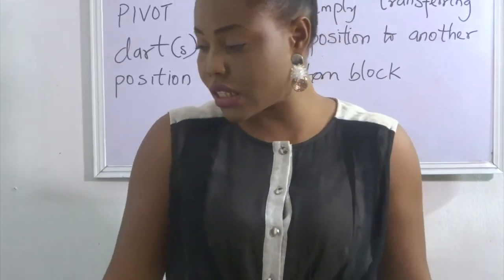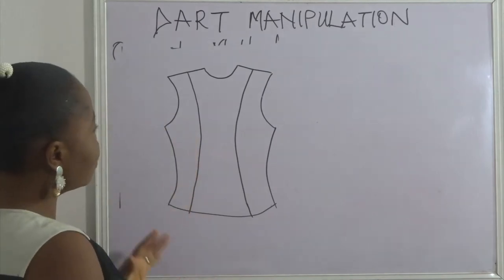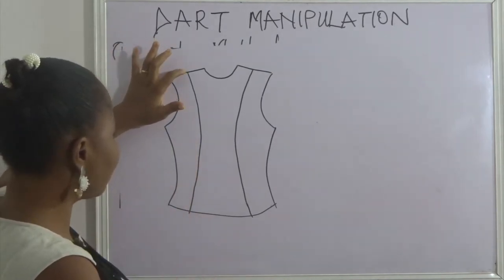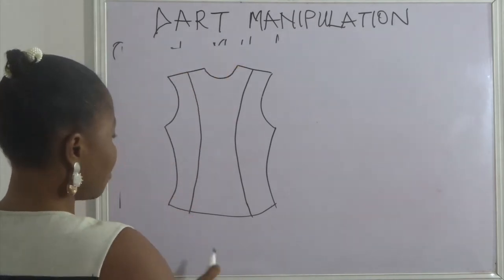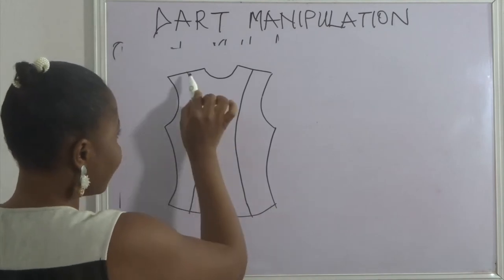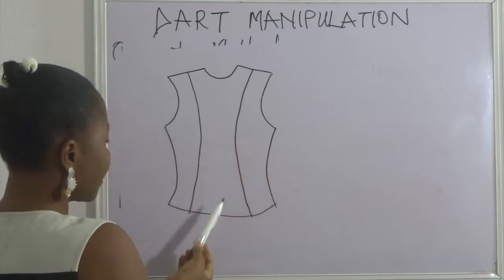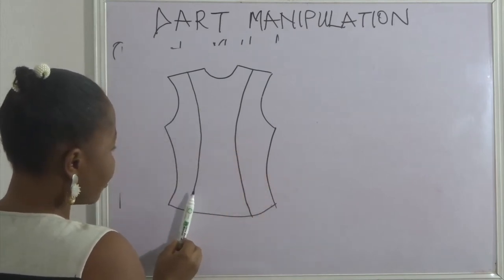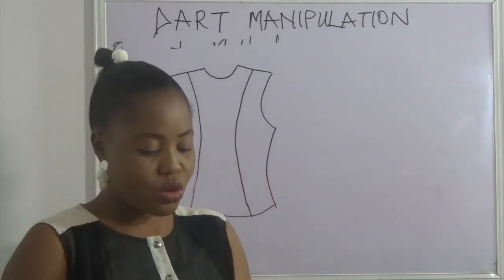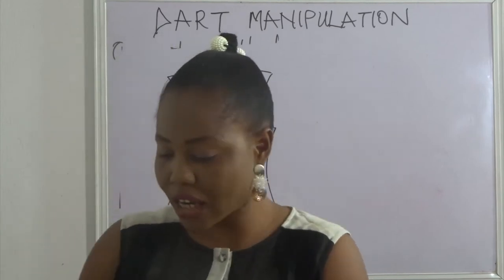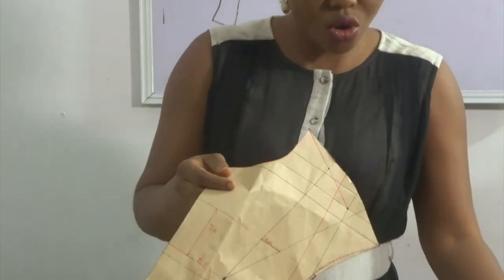The first one I call the princess style line. When you see a garment that has a seam line coming from the shoulder down through to the waist and the hip — whether it's a gown or a blouse — that is a princess style line. In this style, the dart is not visible on its own; it has actually been incorporated into that seam line.